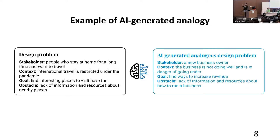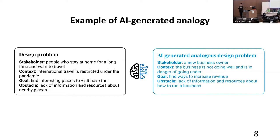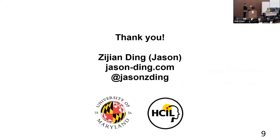We need to help the language model understand the core components of a problem. We define several components: the stakeholder, the context or situation, the goal, and the obstacle. We try to generate an analogy with a similar goal and obstacle but a different stakeholder and context. For example, the original problem is that people want to find a fun place to visit but lack information — an information-seeking problem. We used GPT-3 to generate an analogy of a business owner who wants to increase revenue but also lacks information, and we borrow wisdom from that situation to solve the original problem.